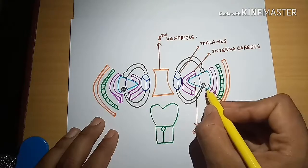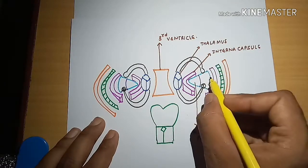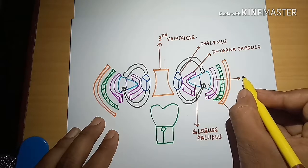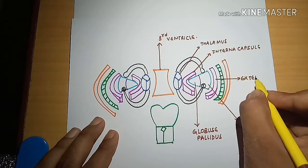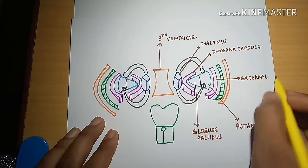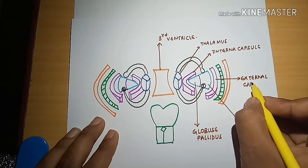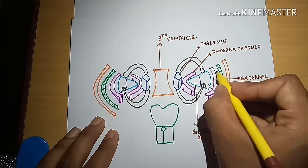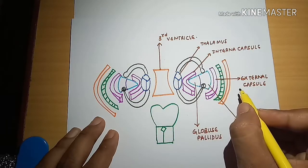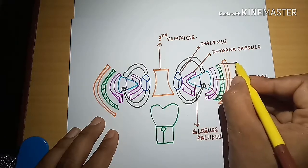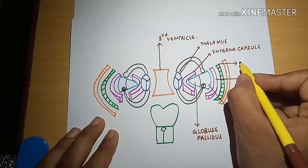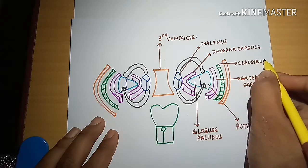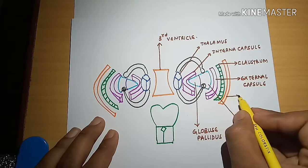More laterally to the lentiform cell, this portion is the external capsule. And more laterally to the external capsule, this mass of gray matter is called the claustrum. And this is the extreme capsule, present more laterally to the claustrum.